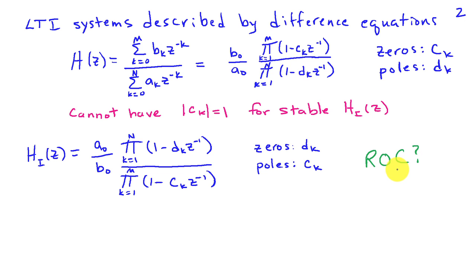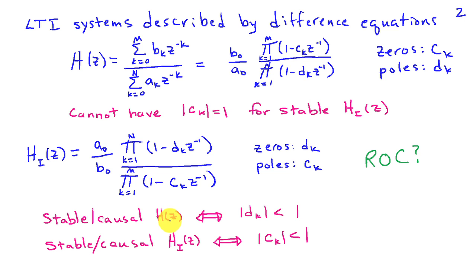The question arises that we don't know exactly what the region of convergence is here, other than that it must intersect with the region of convergence of H of z. But we do know that H of z is stable and causal when the magnitude of the poles are all inside the unit circle. Similarly, that implies that HI of z will be stable and causal when the magnitude of the ck's are inside the unit circle, because the ck's are the poles of HI of z. So for a stable and causal system H of z to have a stable and causal inverse system HI of z, all the poles and zeros of H of z must be inside the unit circle.